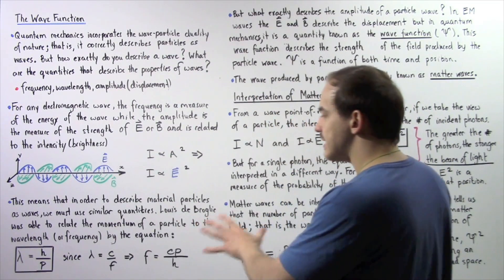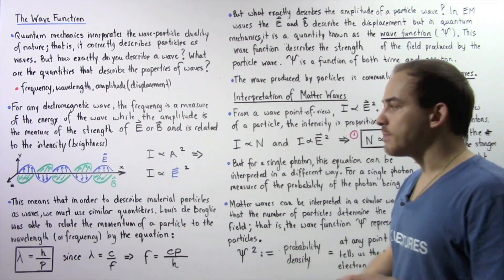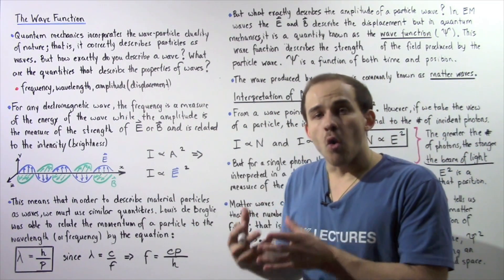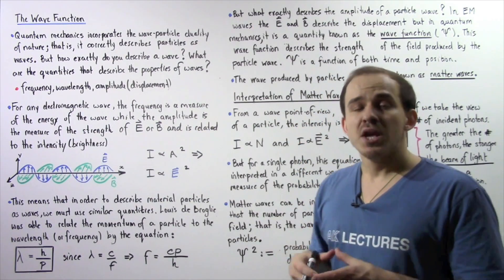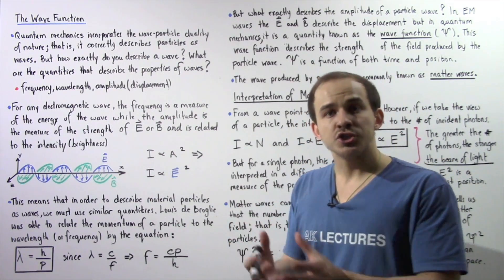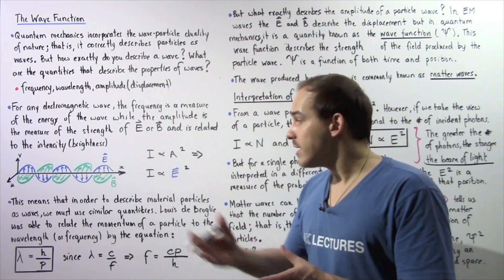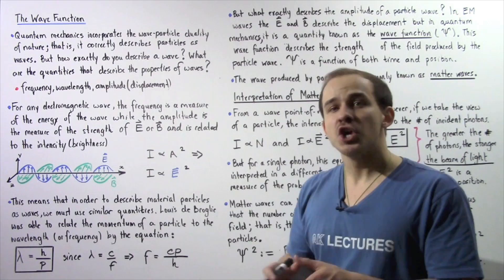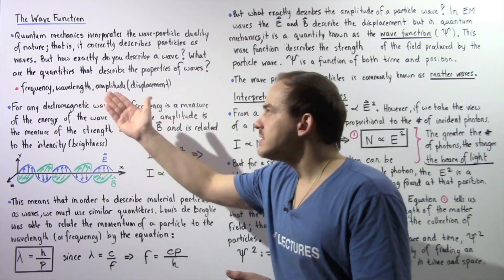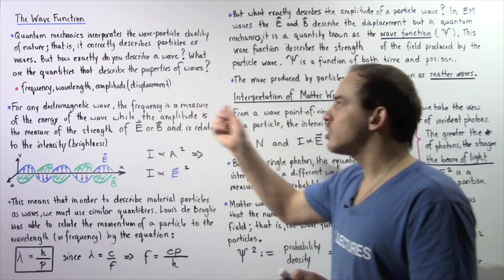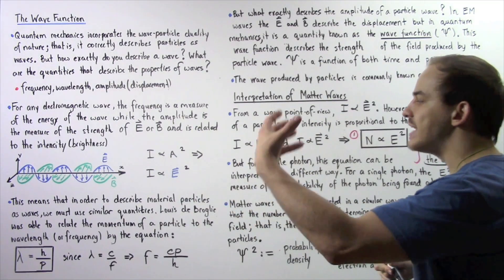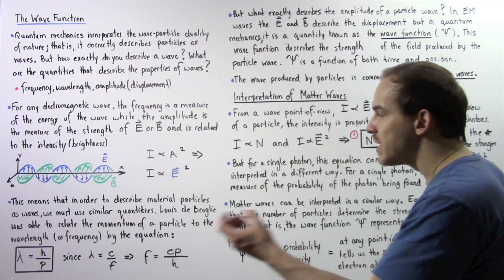What this means is that in order to describe material particles, such as electrons, as waves, we must be able to use these same physical quantities — such as frequency, wavelength, and amplitude.